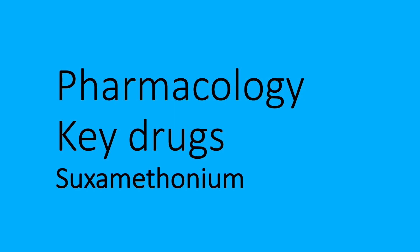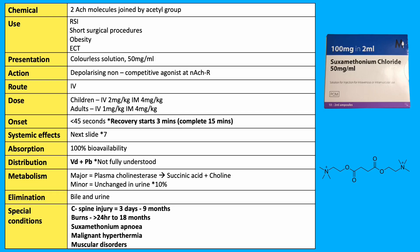Suxamethonium is formed by two acetylcholine molecules joined by an acetyl group. It has a range of uses: rapid sequence induction, short surgical procedures which require intubation, obesity where there are concerns over intubation and ventilation, and ECT.